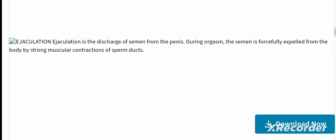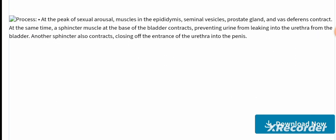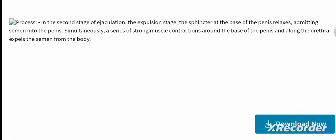Ejaculation is the discharge of semen from the penis. During orgasm, semen is forcefully expelled from the body by strong muscular contractions of the sperm duct. At the peak of sexual arousal, muscles in the epididymis, seminal vesicles, prostate gland, and vas deferens contract. Sphincter muscles at the base of the bladder contract preventing urine from leaking into the urethra. In the second stage, the expulsion stage, the sphincters at the base of the penis relax, admitting semen into the penis. Strong muscle contractions around the base of the penis and along the urethra then expel the semen from the body.